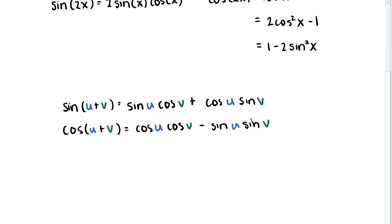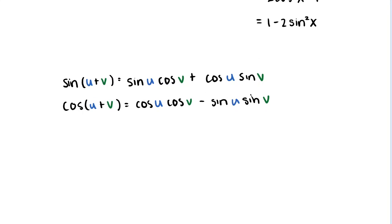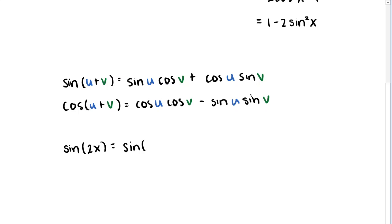So how can we use these identities to prove the double angle identity for sine? We want to write sine of 2x in a slightly different way — find a new expression for sine of twice our input x. We can recognize that sine of 2x is the same as sine of x plus x, since 2x is the same as x plus x.